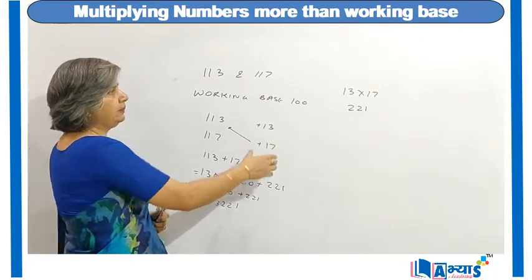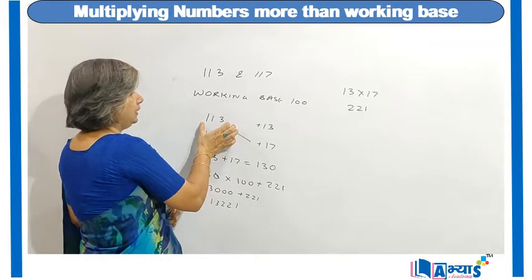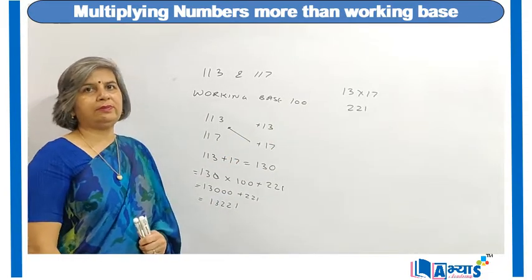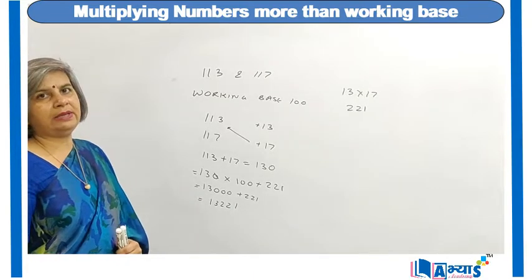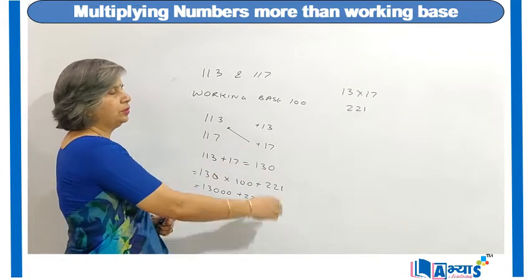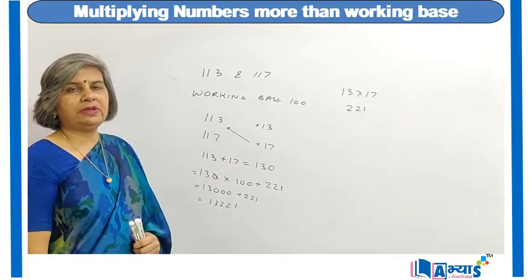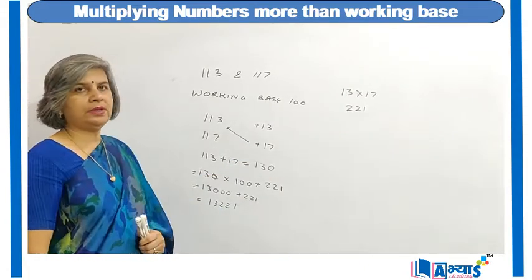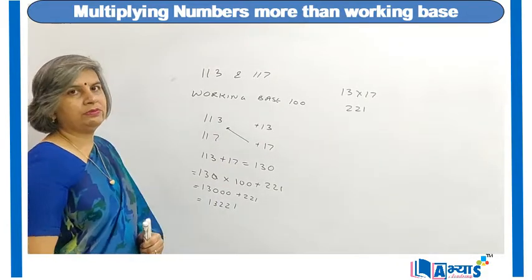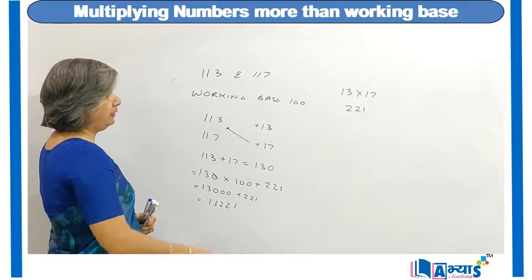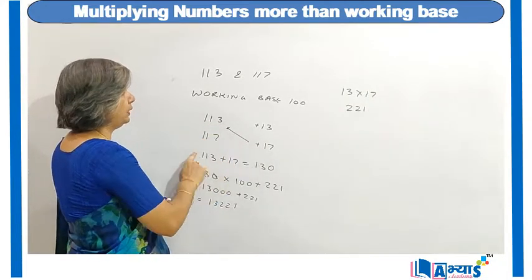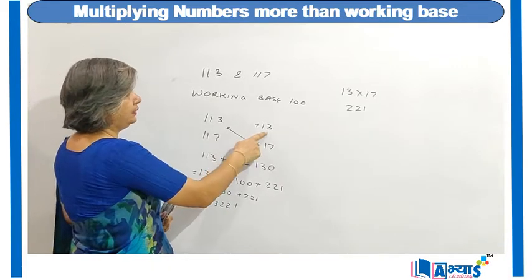We took the base as 100. 113 means 13 more than 100 — we get 113 by adding 13 to 100. And 117 is 17 more than 100, because 17 added to 100 gives 117. To perform the multiplication, I will perform diagonal addition — adding 113 with 17, or adding 117 and 13.